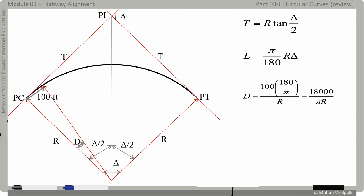And this one is because you are measuring this 100 feet along the length of the curve it is called the arc definition and we'll use only arc definition don't get confused with any other definition.